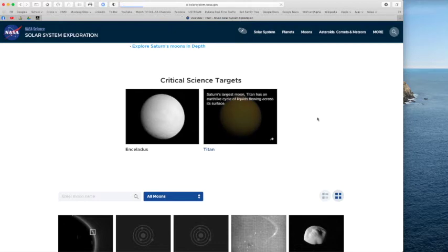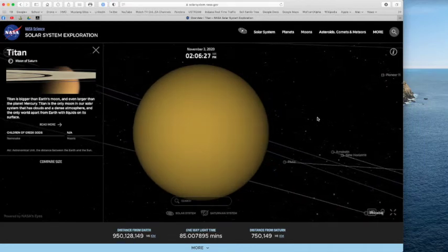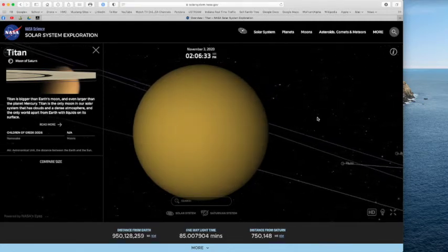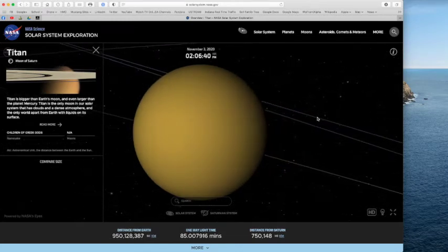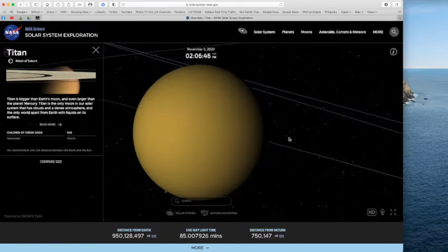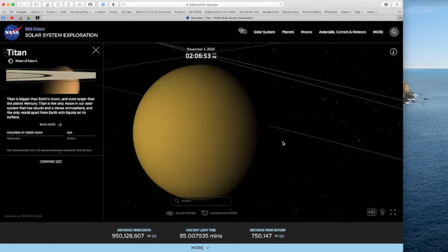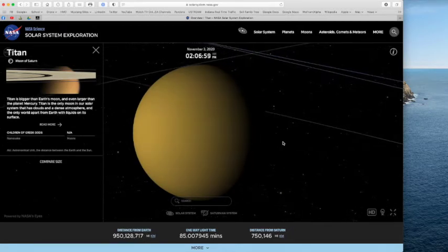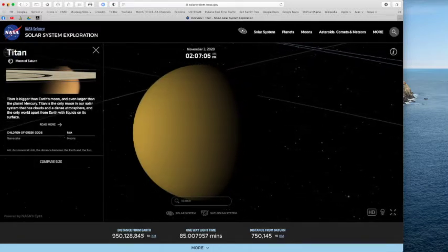There's one moon I'd like for you to know in this Saturn system, and it's this one right here called Titan. Titan is the only moon that we have ever landed a robot on other than our own moon. It is bigger than Earth's moon and even larger than the planet Mercury. Titan is the only moon in our solar system that has clouds and a dense atmosphere and the only world apart from Earth with liquids on its surface. There is liquid methane on the surface of Titan. Titan is the biggest moon. The word Titan means very large.